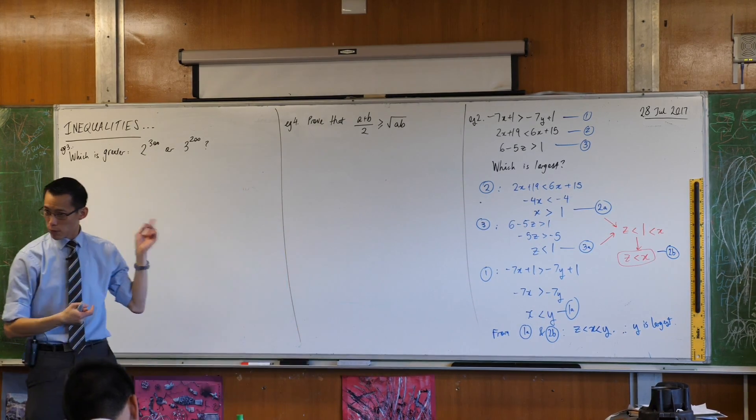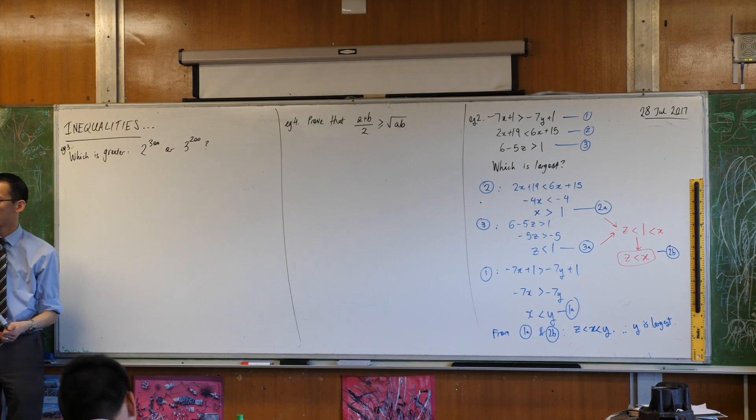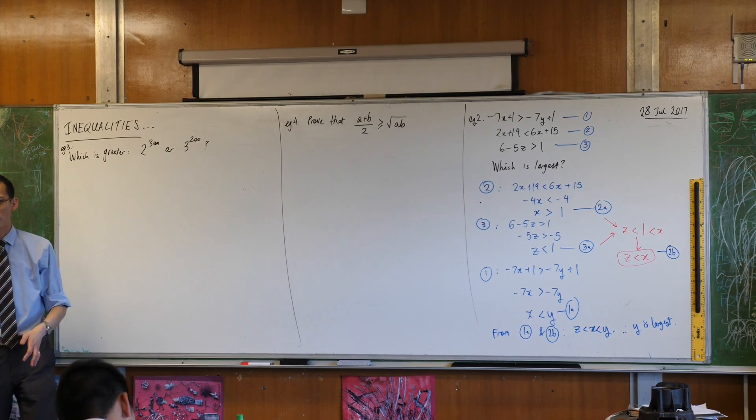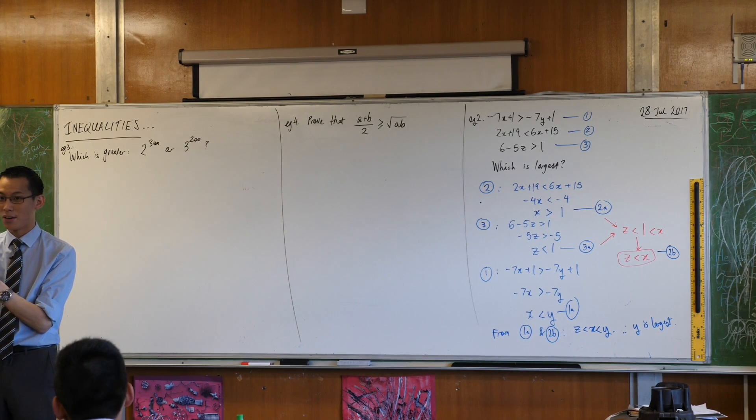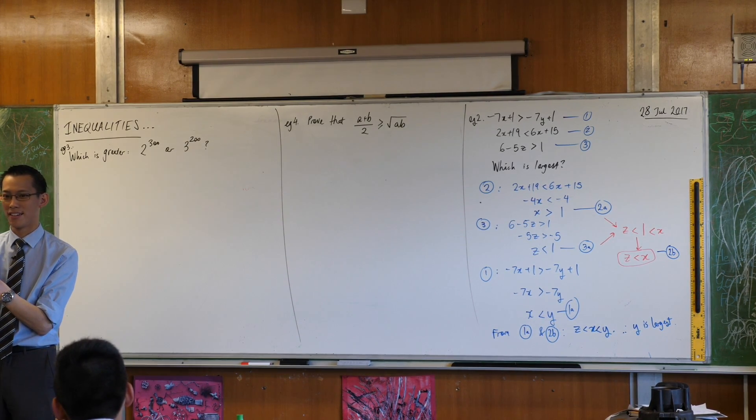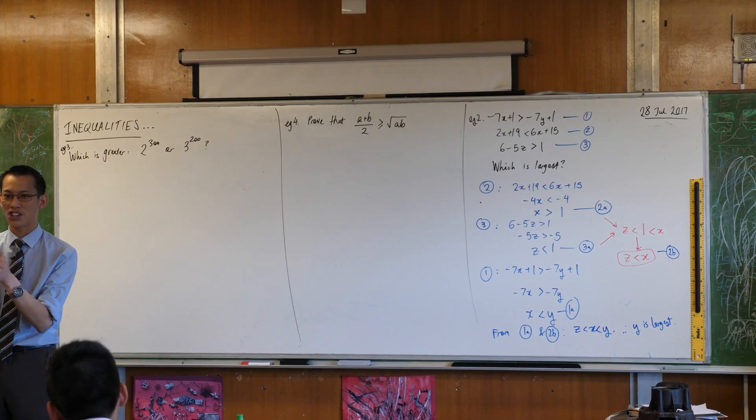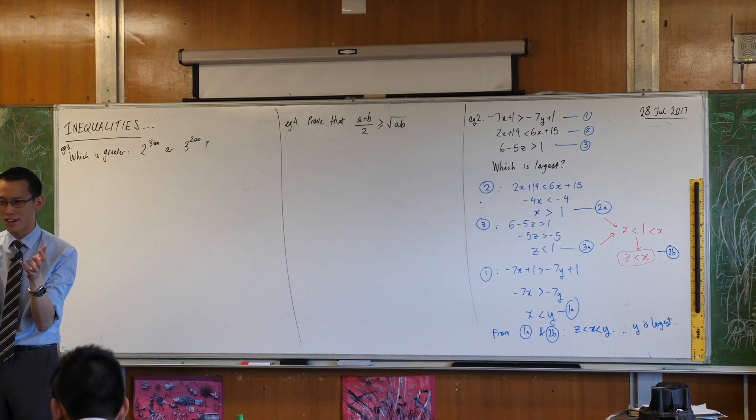The biggest problem with this is the numbers are enormous. In fact, has someone got a calculator on them? Did someone try? Did your calculator give you a number back or did it say math error? Is it too big? Did you get weird scientific notation? Is that what you got? So you're like, I don't even know how to read this.